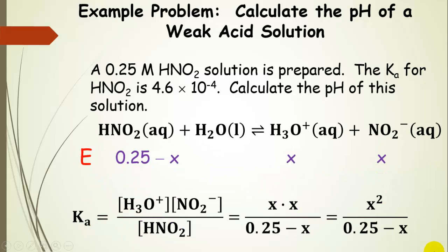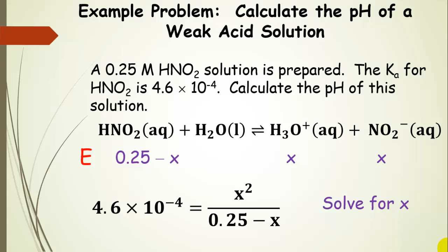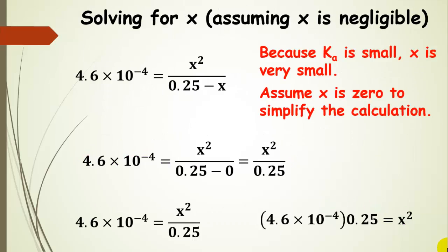We're going to do the same thing we did through the equilibrium unit — plug in X for each hydronium and nitrite in the Ka expression. That simplifies to X squared over the concentration of nitrous acid, which is 0.25 minus X in the denominator. Now here's a little trick: because this Ka value is so small, the amount of change X is going to be pretty small. This small value of Ka says there is very little product, meaning very little of the acid is going to be converted to products.